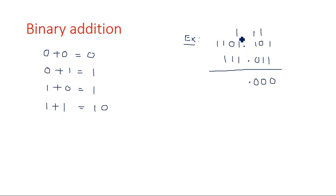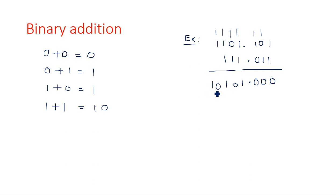When three 1s are added: 1 plus 1 is 1 0, then 1 0 plus 1 is 1 1 — so result digit is 1 and carry is 1. Working through all columns with carries gives the final result. Binary addition, subtraction, multiplication and division all follow specific rules, unlike simple normal integer arithmetic.